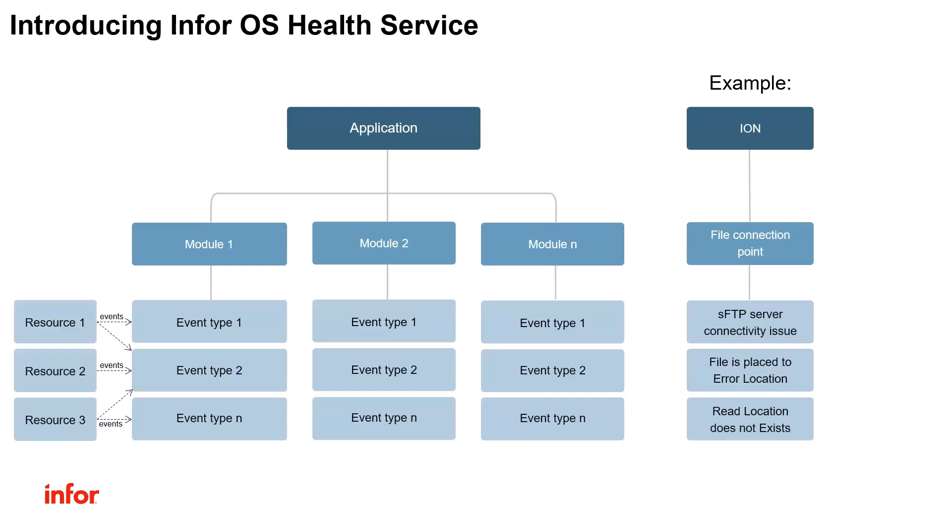The next level is Resources. A resource is a specific component of the application that can send events to the Health Service. An example in Ion can be a specific connection point. You can create as many connection points as you need in Ion, and each connection point may have some issues — connectivity issues, configuration issues, and other issues. Each connection point will separately send events to the Health Service. We call this a Resource. The message we send to Health Service is called an Event.